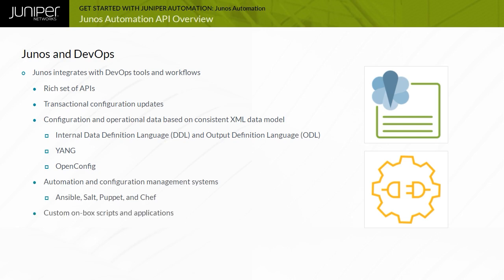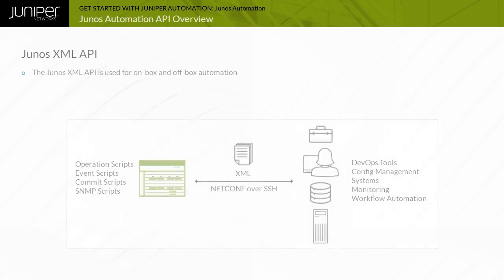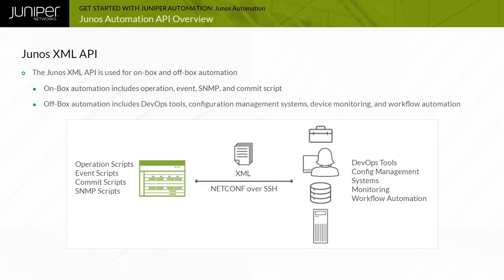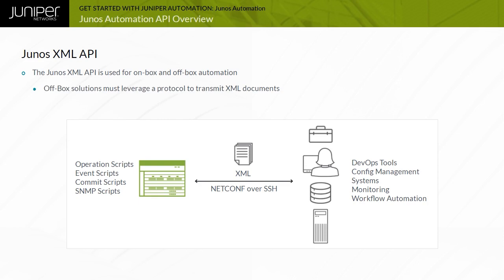In addition to remote management through APIs, Junos supports on-box scripts and applications. The Junos XML API provides on-box automation: operation, commit, event, and SNMP scripts, as well as off-box automation using third-party automation tools. To retrieve data from the Junos XML API, off-box solutions must leverage a protocol to transmit XML documents. One protocol used for Junos off-box automation is NETCONF.